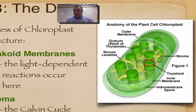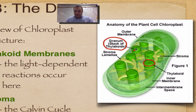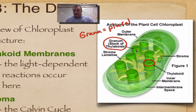I always think of thylakoids like little green poker chips. Now we do need to know this term: granum. A granum is a stack of poker chips. I always remembered it like this — granny likes to stack her poker chips. There's more than one stack in here, so the word grana is plural. So this is one granum, and multiple stacks are called grana.